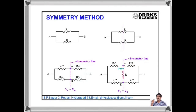Consider a circuit where two resistors R and R are connected in parallel between A and B. When there is a symmetry line about AB, the potential divides equally and all points on the symmetry line have the same potential. You can also think of it this way: when P by Q equals R by S, the potential at C equals the potential at D. Even if you connect a resistance R between C and D, there is no current flowing — because when a cell is connected between A and B, points C and D are at the same potential. This is the basic principle.